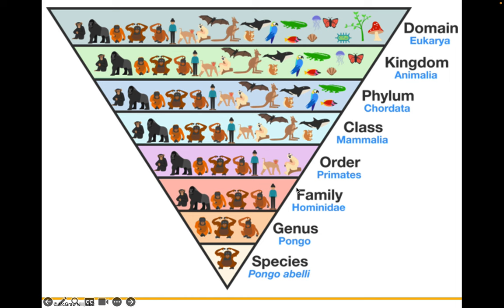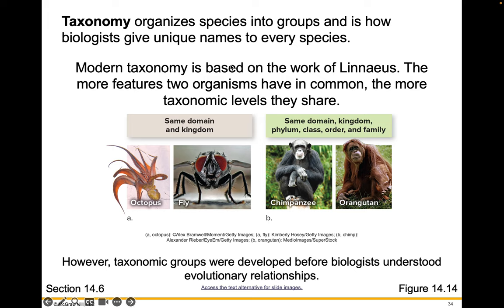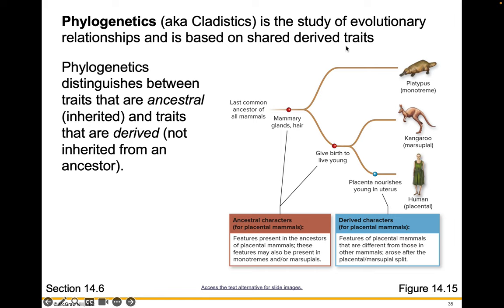Taxonomy organizes species into groups and is how biologists give unique names to everything. Modern taxonomy was started with the work of Linnaeus; the more features two organisms have in common, the more taxonomic levels they share. However, taxonomic groups were developed before biologists understood evolutionary relationships. This is where phylogenetics, also called cladistics, comes in — these two terms are synonymous. Phylogenetics is the study of evolutionary relationships and is based on shared derived traits, meaning traits inherited from ancestors.